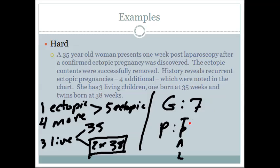How many term pregnancies does she have? She's only had one that went to 38 weeks — and twins only count as one pregnancy, not two. So T1. How many preterms? Only one pregnancy made it to 35 weeks, so P1. Abortions, ectopics, miscarriages — she had one recent ectopic plus four more, for five total, so A5. And living children: one singleton plus the two twins equals three living children, so L3. This is reported as G7, T1, P1, A5, L3.